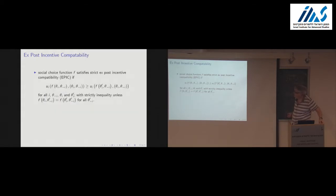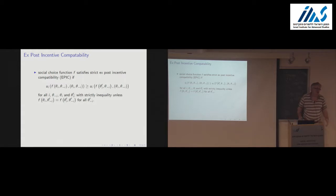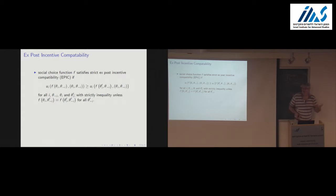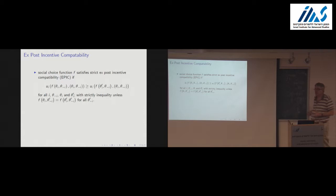The idea here is the same as in Maskin monotonicity under full implementation: the definition of full implementation quantifies over all possible mechanisms, which is difficult. So we come up with conditions expressed in terms of the underlying social choice function. That's the nature of robust monotonicity. If robust monotonicity fails, then you cannot fully implement.